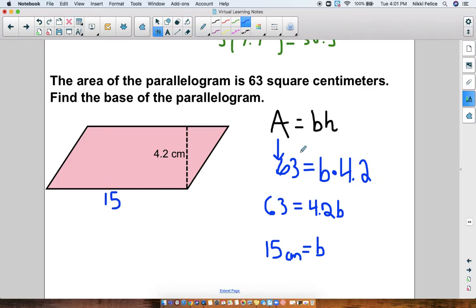And then, of course, you can double check your answer by multiplying 15 times 4.2, base times height. And then that should give you the area, which is 63. And it does, so we know we did it correctly. That's it. That's how you find the area of the parallelogram.